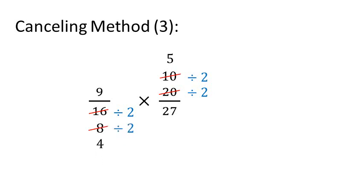In a similar way, 9 and 27 have a common factor. You could find a common factor as 9, but let's say you only found it as 3. So we divide 9 by 3 to get 3, and 27 by 3 to get 9.